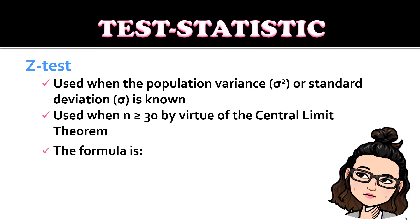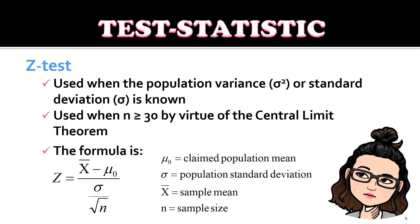The formula for the Z-test has the following variables: mu sub 0 equals the claimed population mean, sigma is the population standard deviation, x-bar is the sample mean, and n is the sample size.